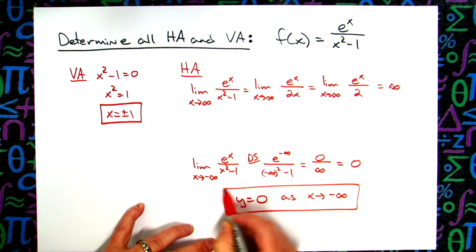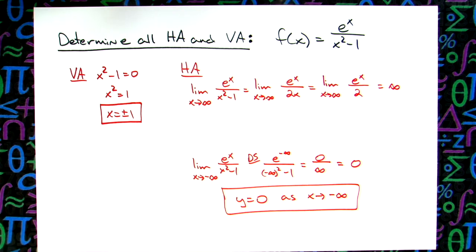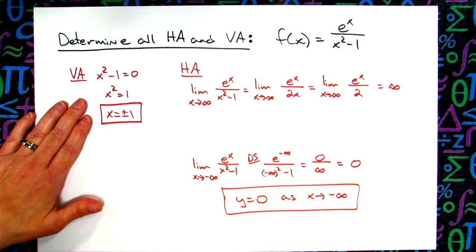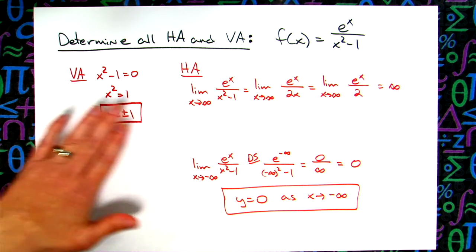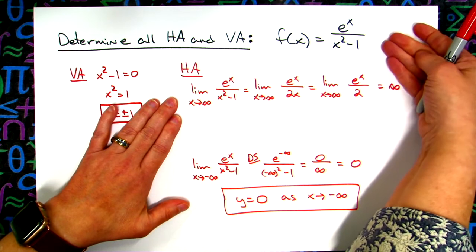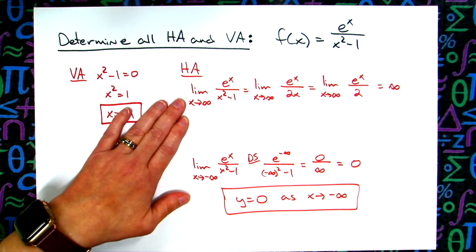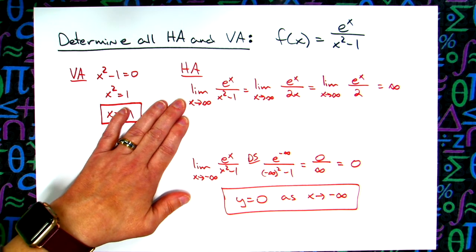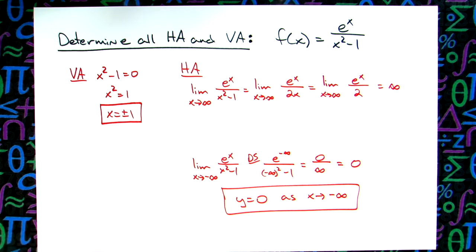Just a quick recap on finding horizontal and vertical asymptotes: the vertical ones are pretty straightforward. If you cannot use shortcuts on your rational functions, then you do need to take the limit as x approaches infinity and the limit as x approaches negative infinity. If the videos are helping, definitely share with your friends so they can benefit too, and don't forget to subscribe to the channel.